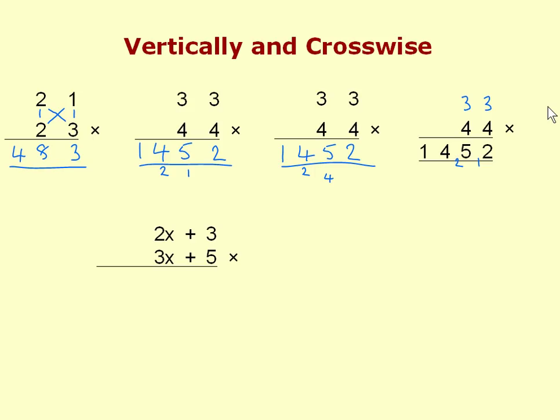The same approach applies to multiplying algebraic expressions. In the conventional system you use a different method for numbers versus algebra, but we use exactly the same pattern to multiply 2x + 3 by 3x + 5. Vertically on the right: 3 times 5 is 15. Crosswise: 2x times 5 is 10x, and 3 times 3x is 9x, giving 19x. Vertically on the left: 2x times 3x is 6x². The answer is 6x² + 19x + 15 — and we can multiply expressions of any size this way, since it automatically gathers all like terms.